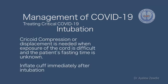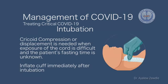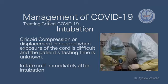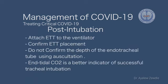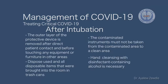Cricoid pressure or displacement is needed when cord exposure is difficult or the patient's fasting time is unknown. Immediately after visualizing and intubating with the video laryngoscope, inflate the cuff immediately and attach the ETT directly to the ventilator. Confirm ETT placement — but do not confirm depth using auscultation. End-tidal CO2 measurement is the better indicator of successful intubation. After intubation, the outer layer of the protective device should be removed before any contact with the patient or equipment in the area.